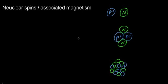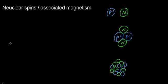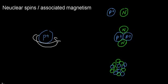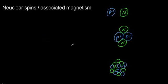Nuclear spins and associated magnetism: we all know that electrons have an inherent property called spin, and accordingly nucleotides — protons and neutrons — also have spin. This is an inherent property. Let's say I have a proton here; it has an inherent property called spin, and I'll draw the axis around which it spins.